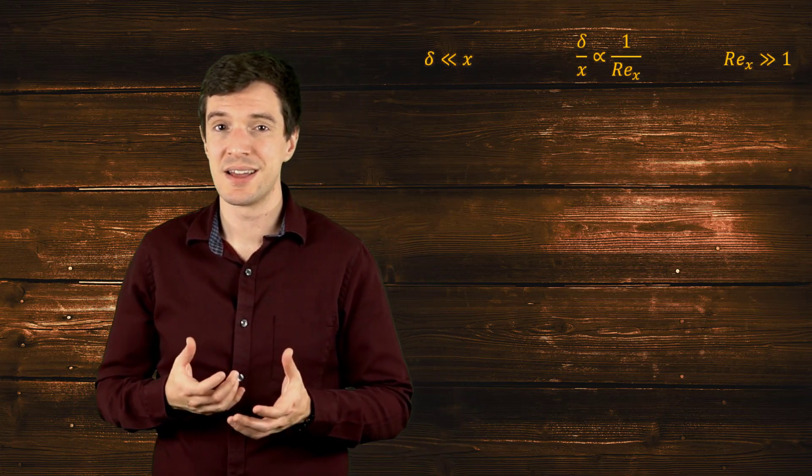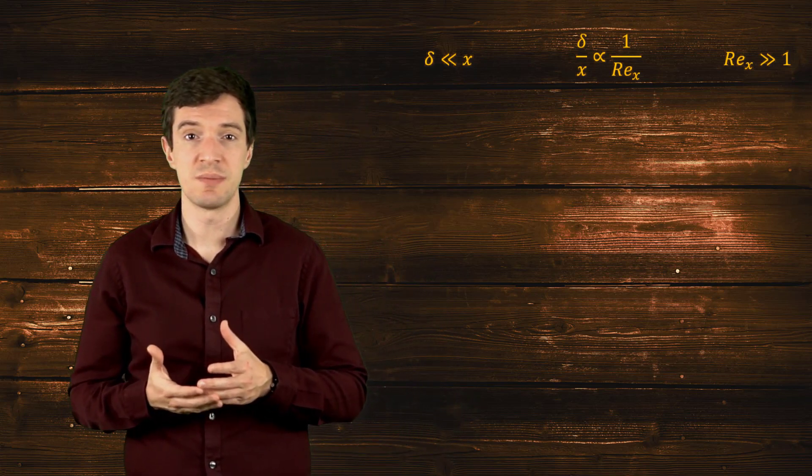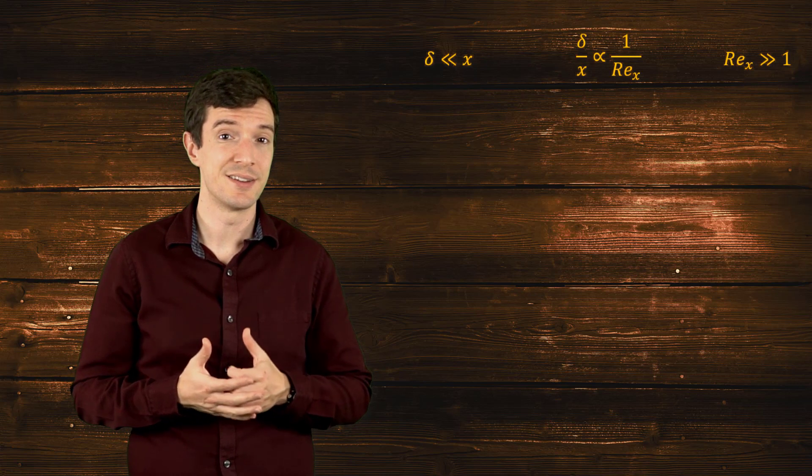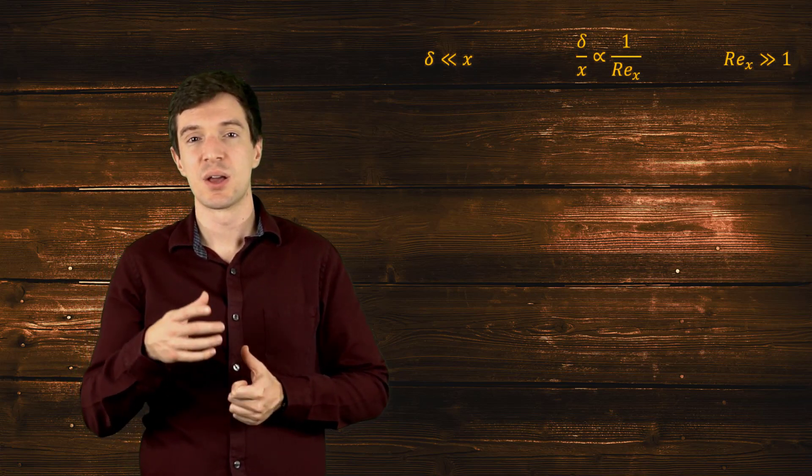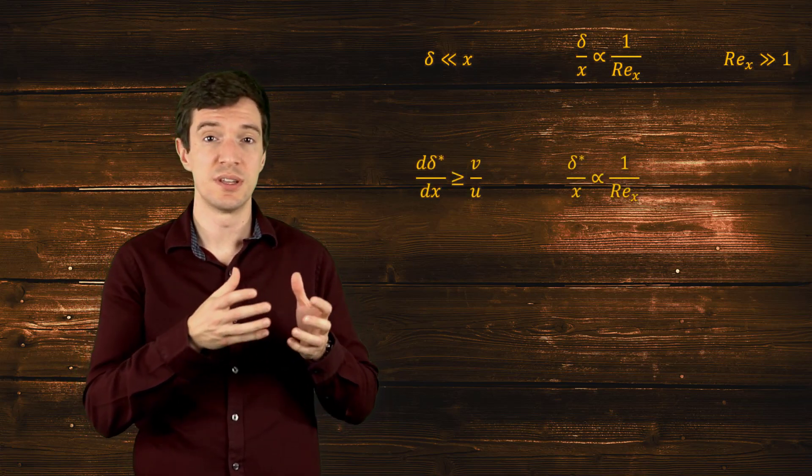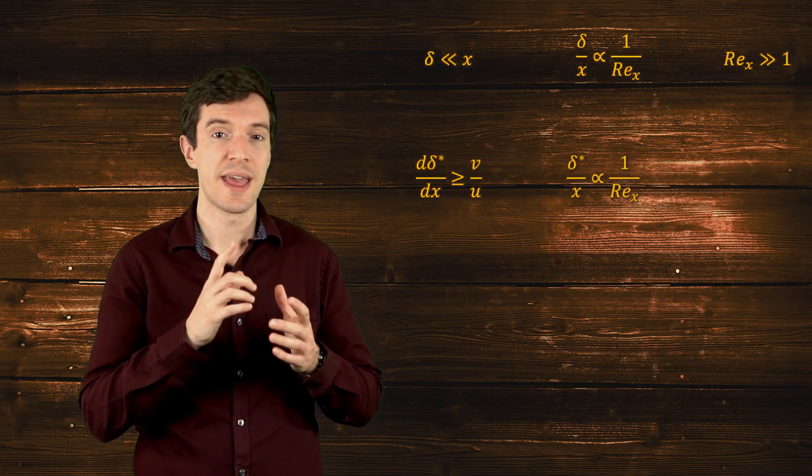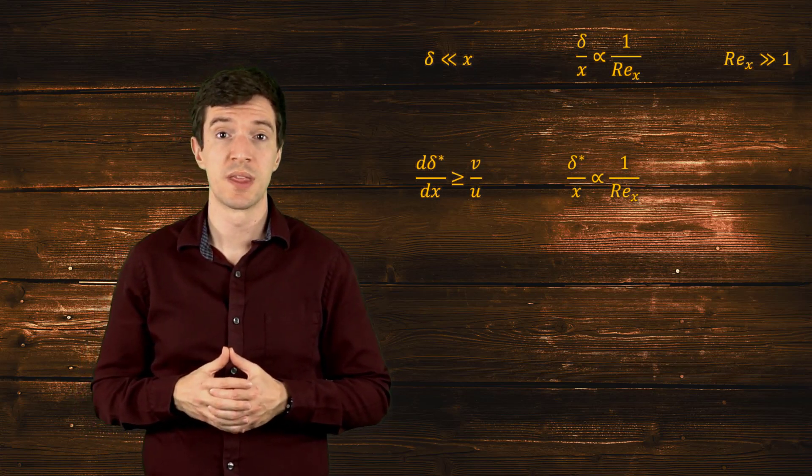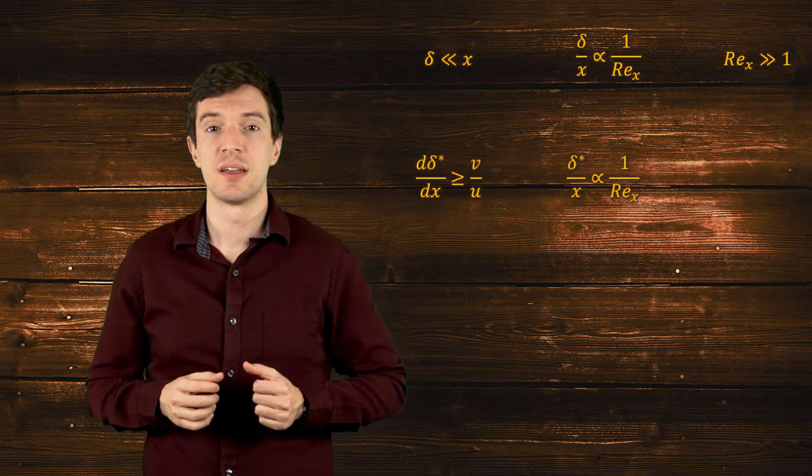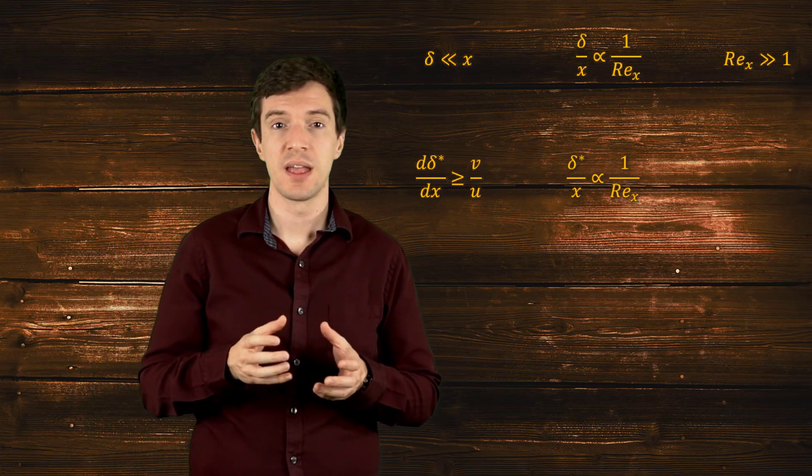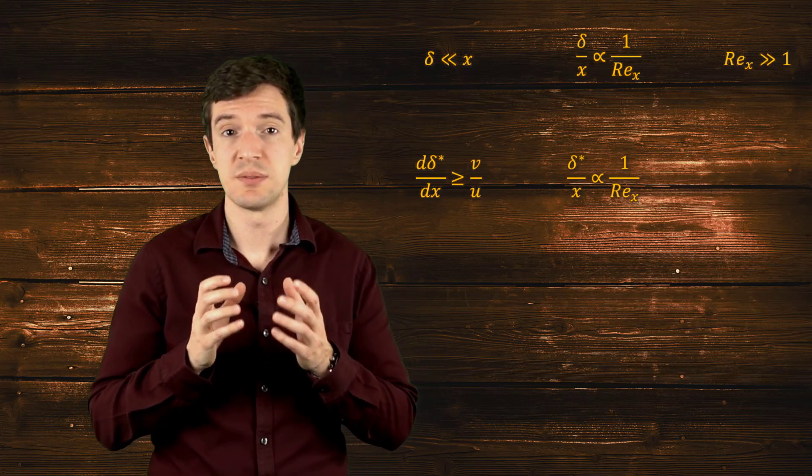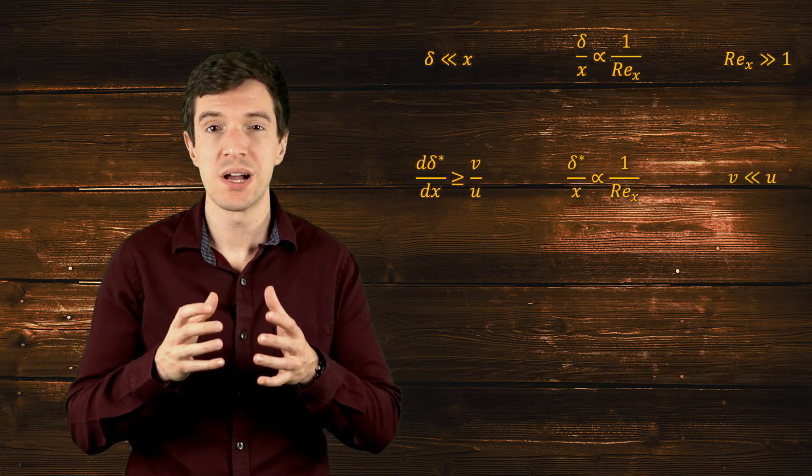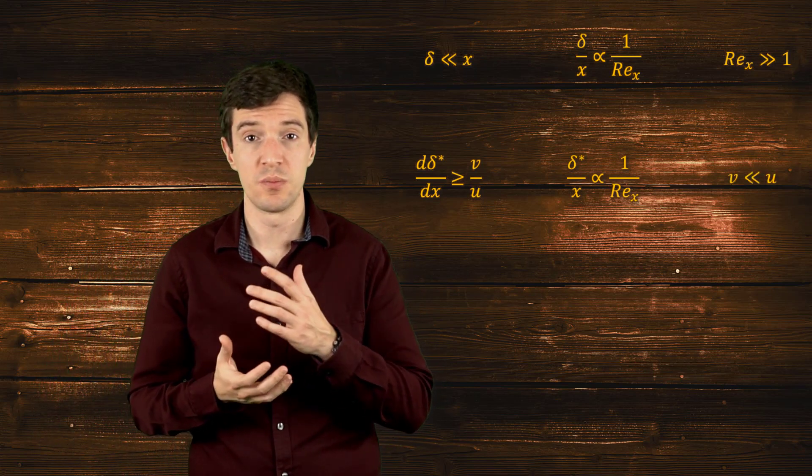Let's now analyze the deviation of the streamline due to the boundary layer. Combining the expression for the displacement thickness and the assumption of large Reynolds numbers, we have that a thin boundary layer has the velocity parallel to the wall much larger than the normal component.